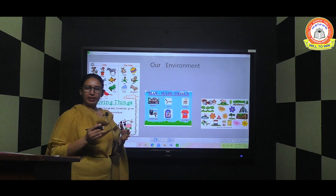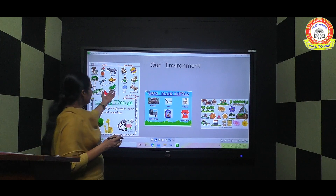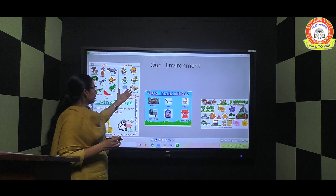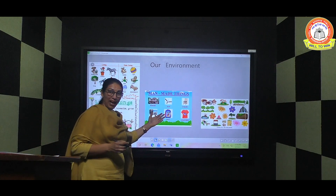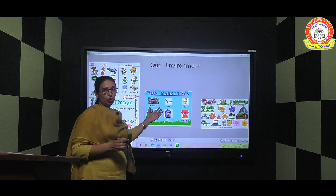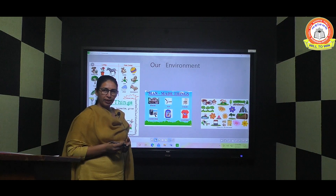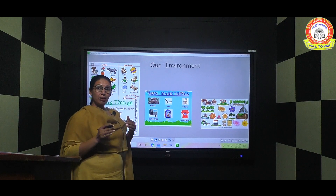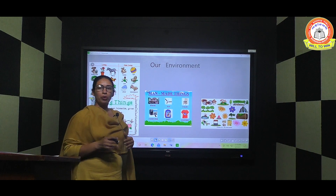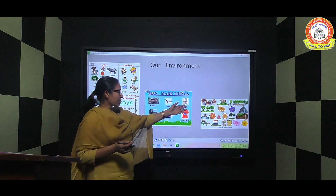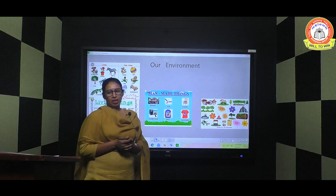These things are divided into different groups. Some things are divided into living things, some into non-living things, some things are made by man — called man-made or human-made things — and some things are found naturally, called natural things.